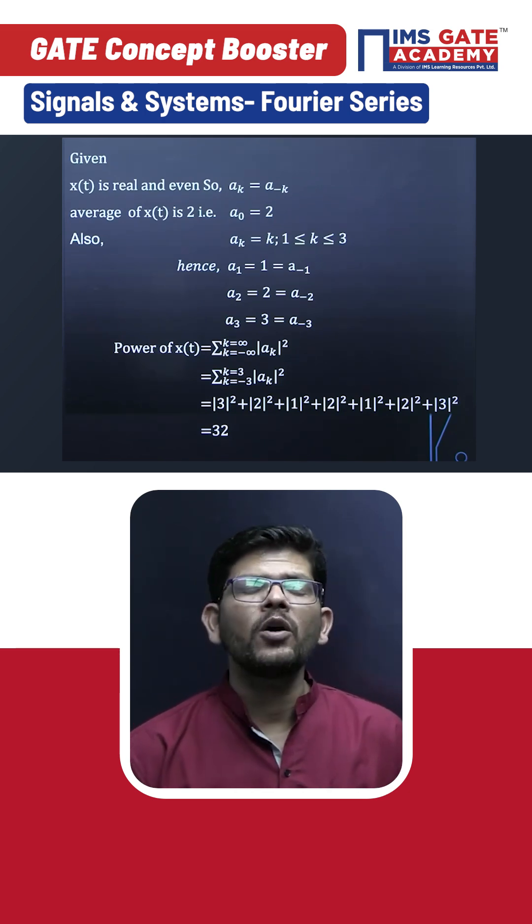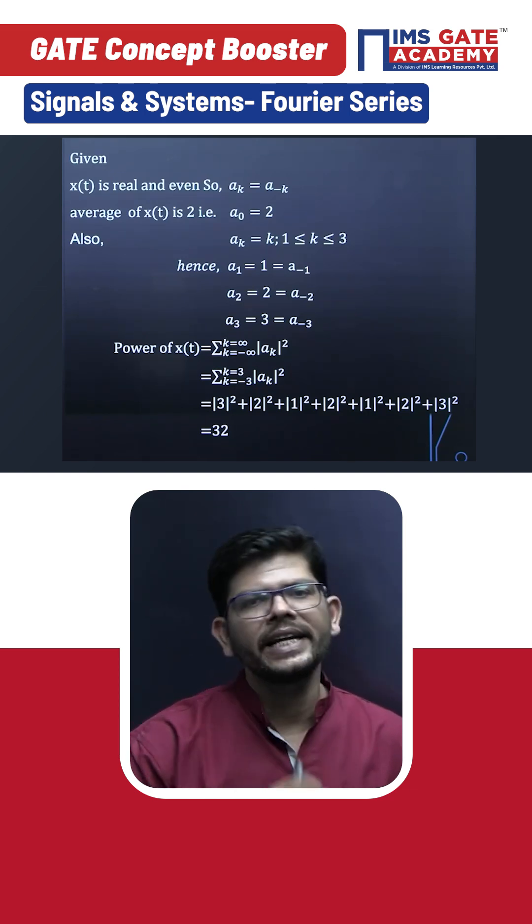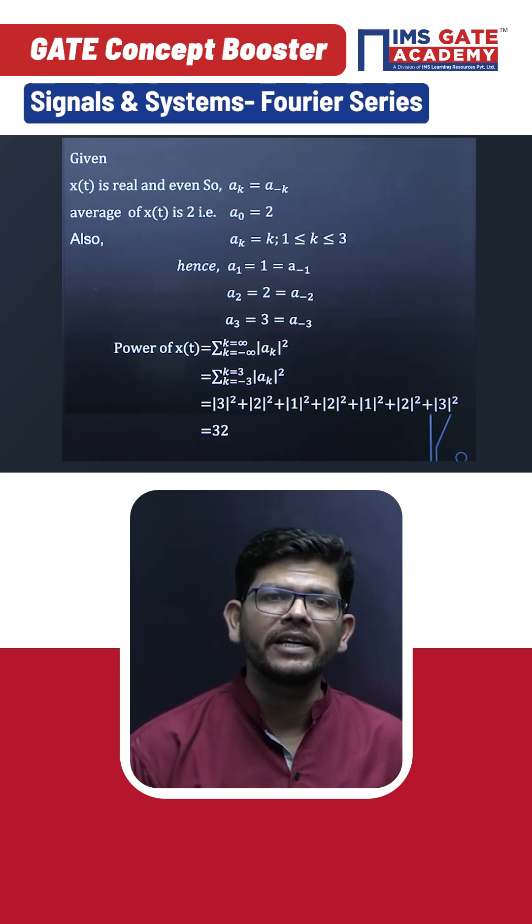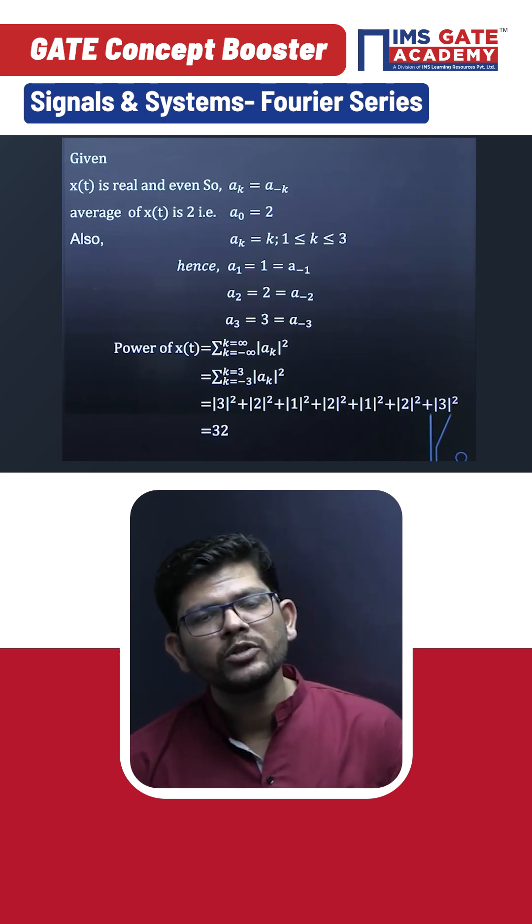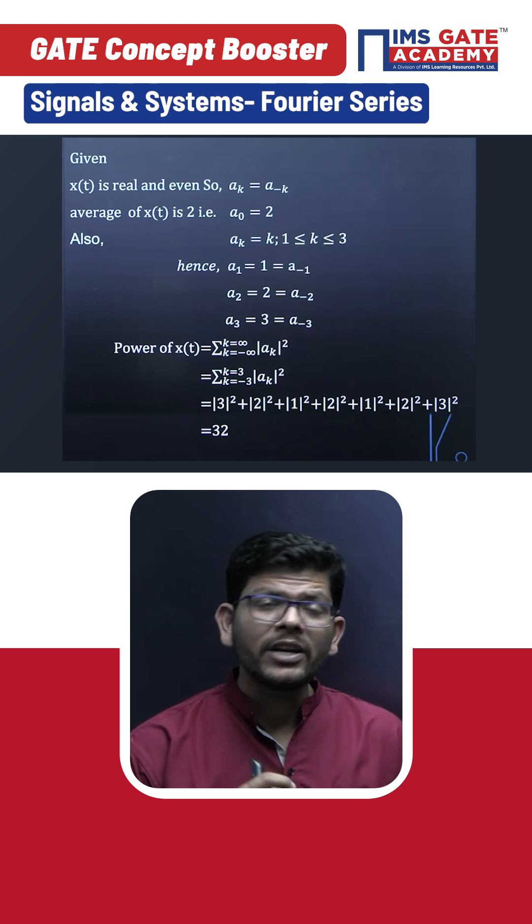So if we have the knowledge of all the Fourier series coefficients, we can get power by simply calculating their modulus, squaring, and adding them. There was some hidden data given in this question that a_k is real and even, so we will get that x(t) is real and even. So a_k will also be real and even. a of minus k will be equal to a_k, and a_0 is given too.